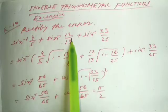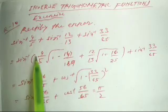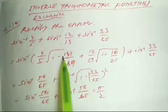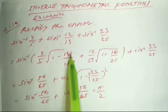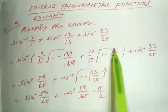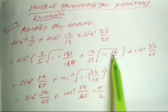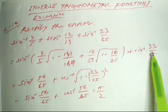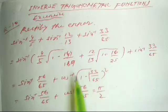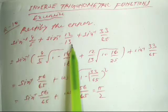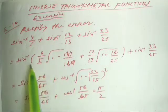It is sin⁻¹x + sin⁻¹y formula. So sin⁻¹(4/5) into square root of 1 minus 144/169, plus 12/13 into square root of 1 minus 16/25, plus sin⁻¹(33/65). This is the sin⁻¹x + sin⁻¹y formula applied.